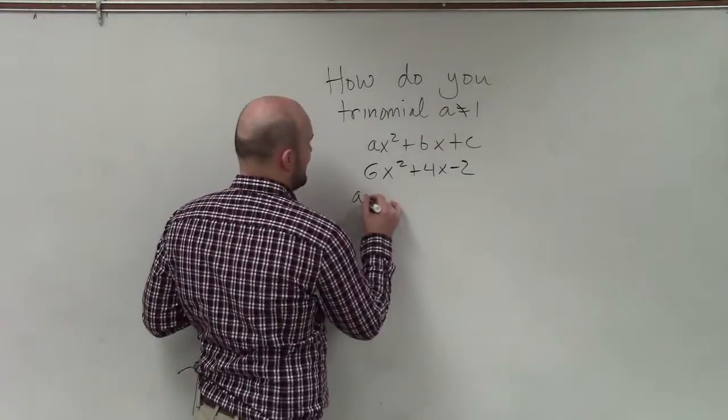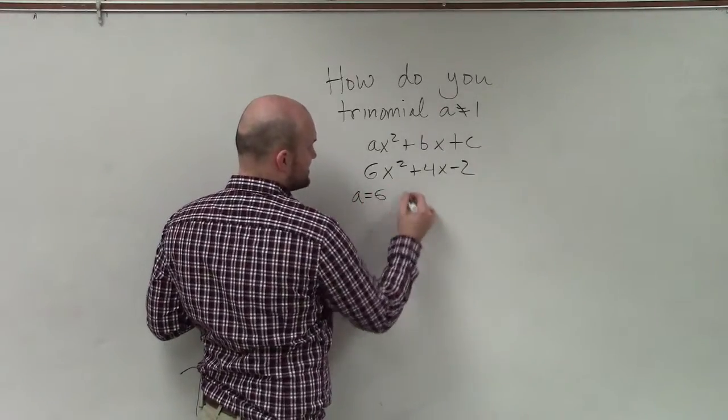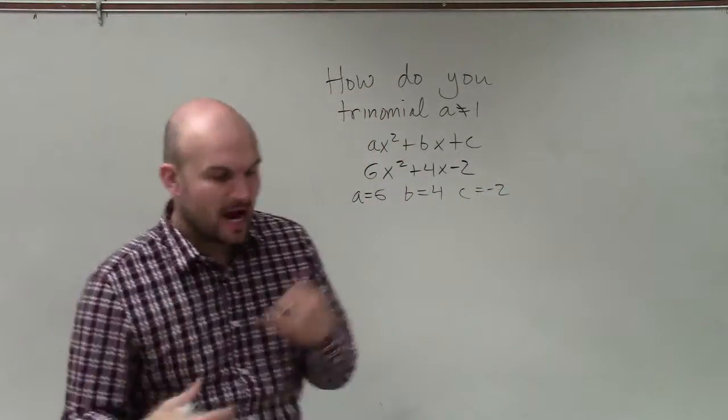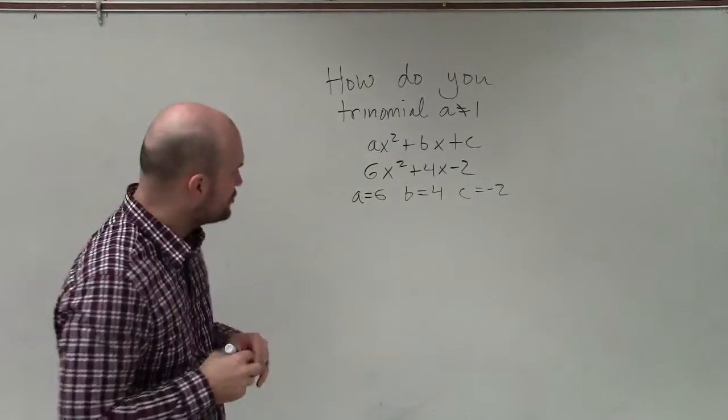So therefore, we can identify what our a is, which in this case is 6, our b, which is 4, and c, which is negative 2. So we can identify our a, b, and our c in our trinomial.